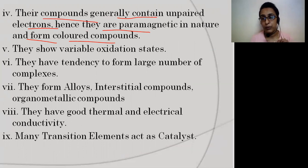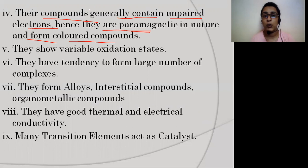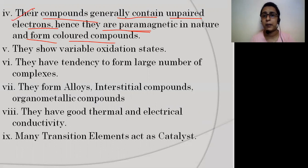Regarding magnetism — paramagnetic, diamagnetic, ferromagnetic: paramagnetic compounds contain unpaired electrons. If a compound contains even a single unpaired electron, it is paramagnetic. If all electrons are paired, it is diamagnetic. Transition element compounds are generally paramagnetic — they contain unpaired electrons and form colored compounds.